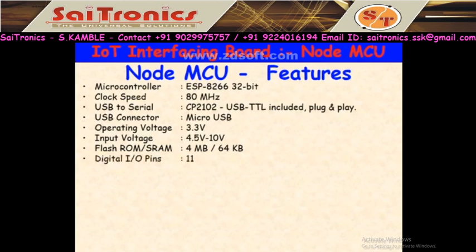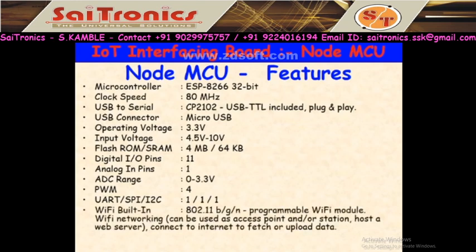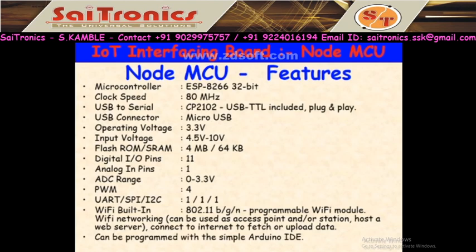There are actually 17 digital GPIO pins but only 11 are available to the user. Analog input pins: only one ADC; input voltage range is 0 to 3.3V. There are 4 PWM pins. It has one UART, one SPI, and one I2C interface. Wi-Fi is built-in to NodeMCU — no need to connect extra Wi-Fi. This Wi-Fi can be used as access point, station, or host to connect to the internet for IoT applications. It also has an on-board PCB antenna.